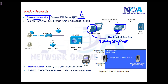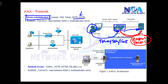Between the Triple A client and the server, we use either RADIUS or TACACS+ protocol. These protocols are responsible for forwarding the client information to the server and getting back the authentication response, or authorization and accounting information, back to the device.